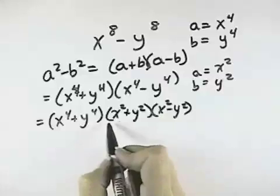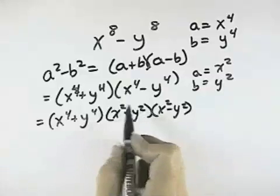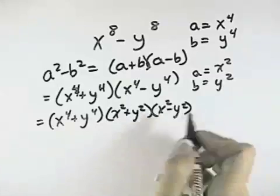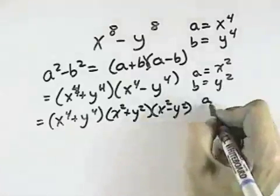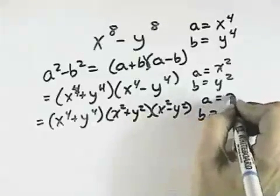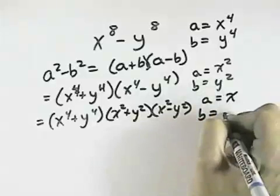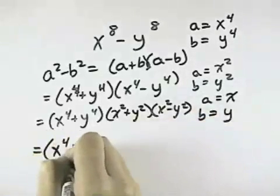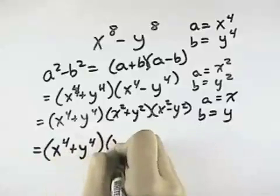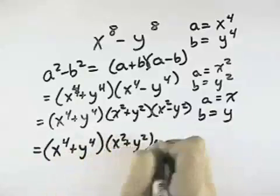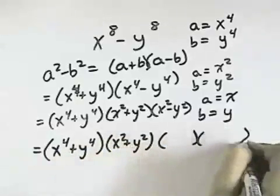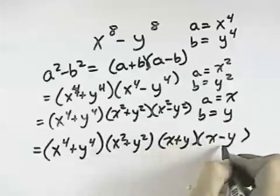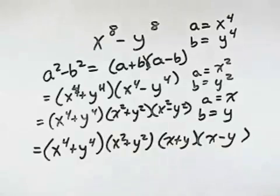Looking at each of these factors again: x squared plus y squared is a sum — they're not perfect cubes, so it cannot be broken down further. With the difference, this is the difference of squares again. So I identify a and b again: the square root of the first term is x, and the square root of the last term is y. So our first factor remains the same, our second factor remains the same, but our third factor can be broken down to the difference of squares — the sum and difference of the square roots. And it is now finally factored completely.